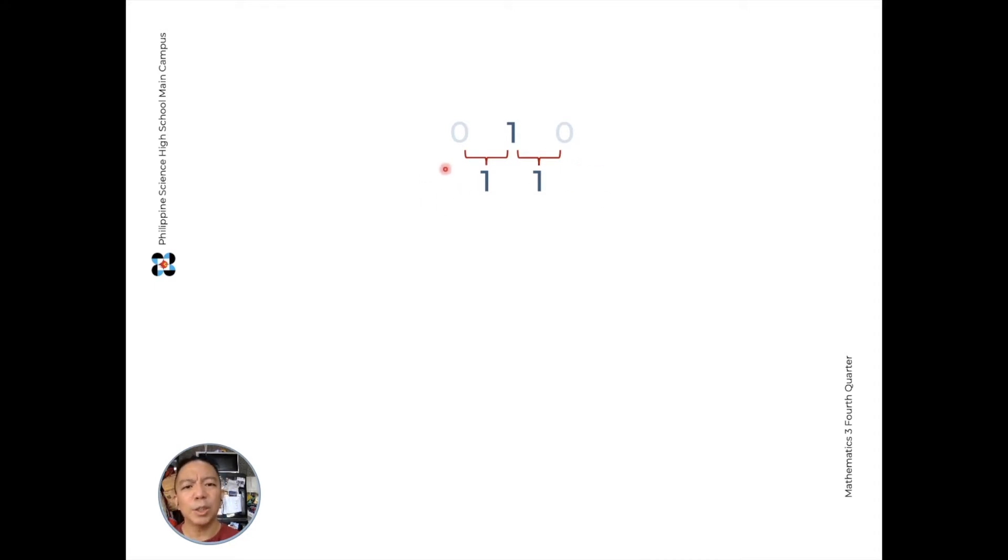So, imagine there's a 0 here, there's a 0 here, but we won't write them anymore. So, we'll have 0 plus 1 is 1, 1 plus 1 is 2, 1 plus 0 is 1.